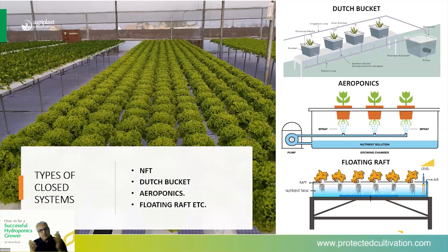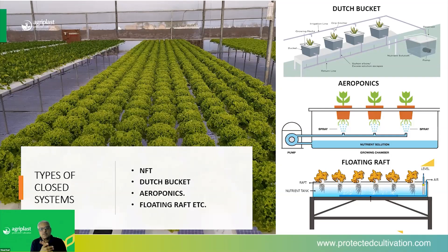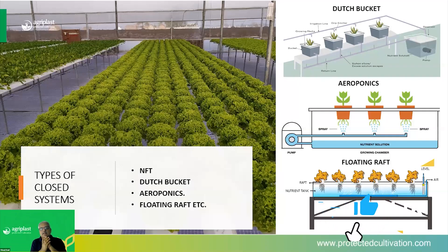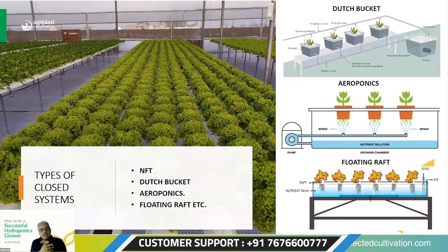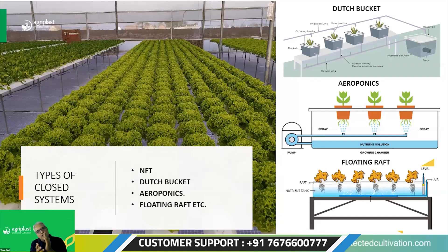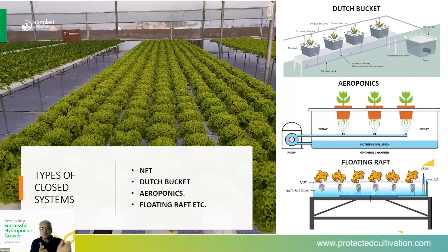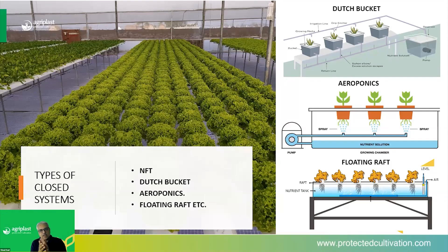Then comes the floating raft. The floating raft is a system wherein plants are made to float with the help of some sort of support on a tank or similar structure. These plants stay there for a pretty long time — in fact, they complete their life cycle there itself. In all three cases, nutrient solution is used. All three systems have their advantages and disadvantages. Some are suited to particular groups of crops; not all systems are suited to all crops. We'll come to that in our next slides.